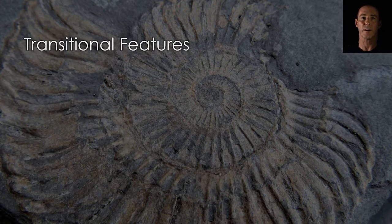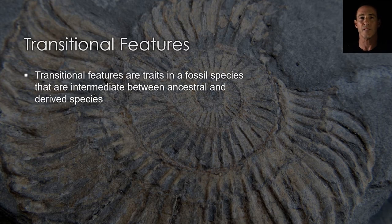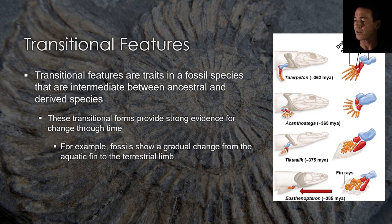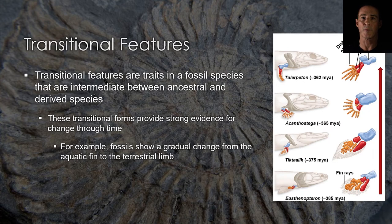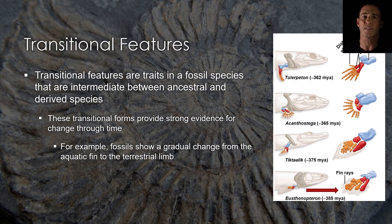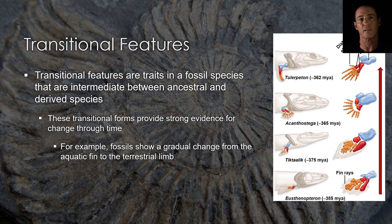Researchers discovered species with characteristics that broaden the scope of the law of succession. A transitional feature is a trait in a fossil species that is intermediate between older ancestral and younger derived species. For example, there are fossils that document a gradual change over time from aquatic animals with fins to terrestrial animals with limbs. Over about 25 million years, the fins of species similar to today's lungfish morphed into limbs similar to those found in today's amphibians, reptiles, and mammals — a group called the tetrapods — supporting the hypothesis that an ancestral lungfish-like species first used stout-lobed fins to navigate shallow aquatic habitats and eventually moved onto land, becoming more and more like today's tetrapods.